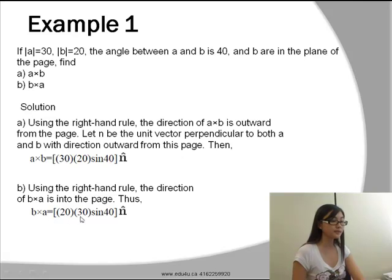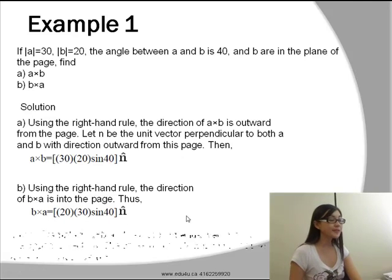And thus, B cross A will be equal to 20 times 30 times sine 40 times the unit vector N.